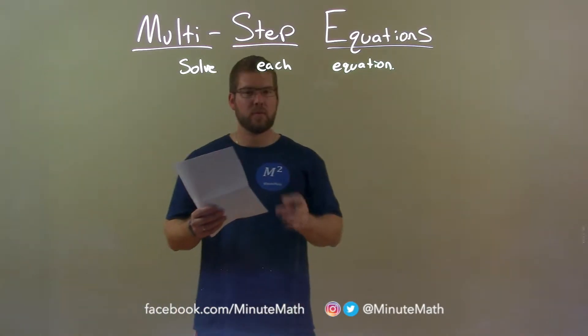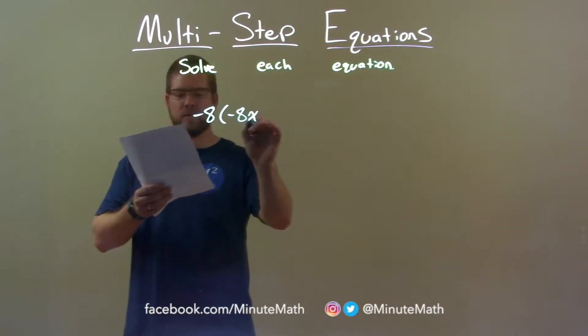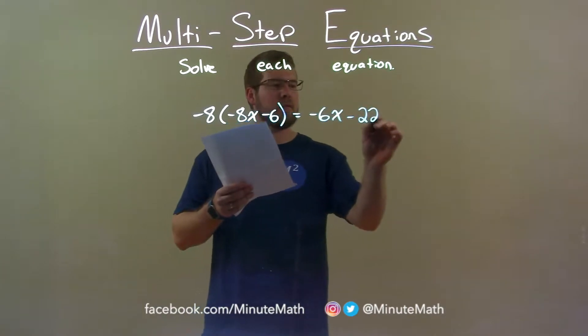If I was given this equation, negative 8 times negative 8x minus 6 equals negative 6x minus 22.